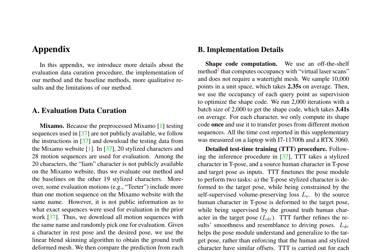The paper discusses the evaluation data curation procedure for the McSamo and MGN datasets, as well as implementation details of the proposed method and baseline methods such as NBS and SPT. It also provides additional qualitative comparisons, deformation results, and limitations of the proposed approach. The authors follow instructions to download testing data from the McSamo website, focusing on 19 stylized characters and randomly picking one motion sequence for each character.